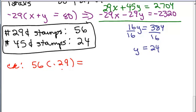So we have to do 56 times 0.29, and that's 16 dollars and 24 cents. It's really money. If you want, you could put a dollar sign there.